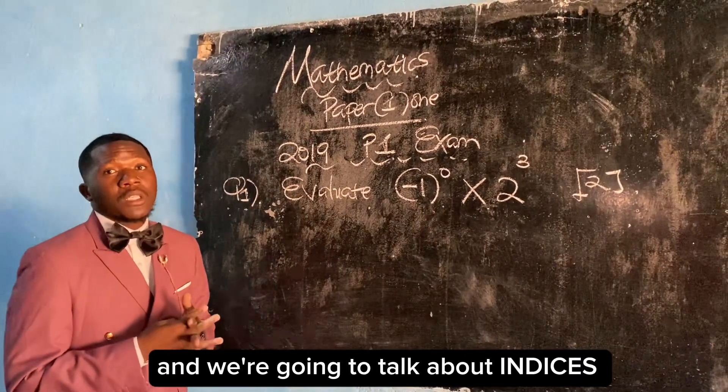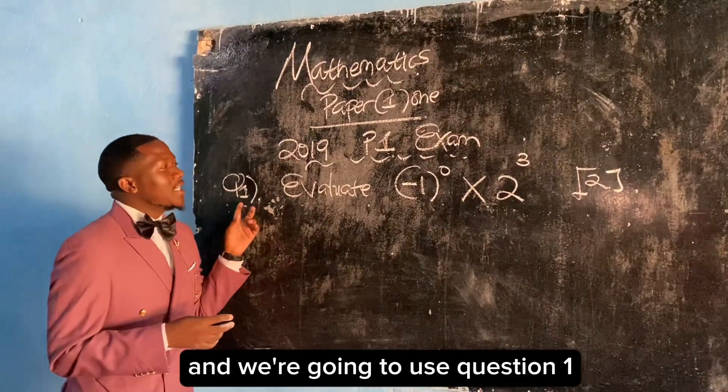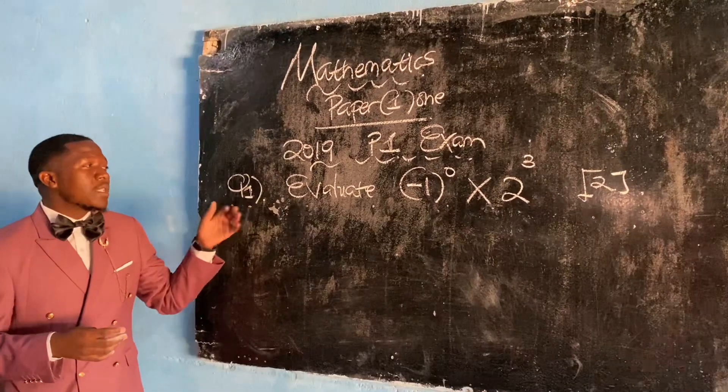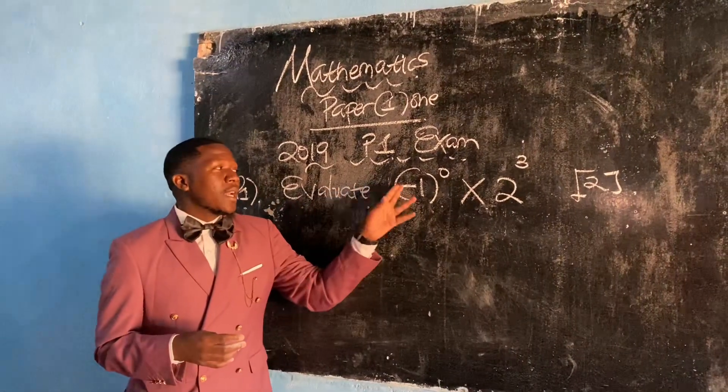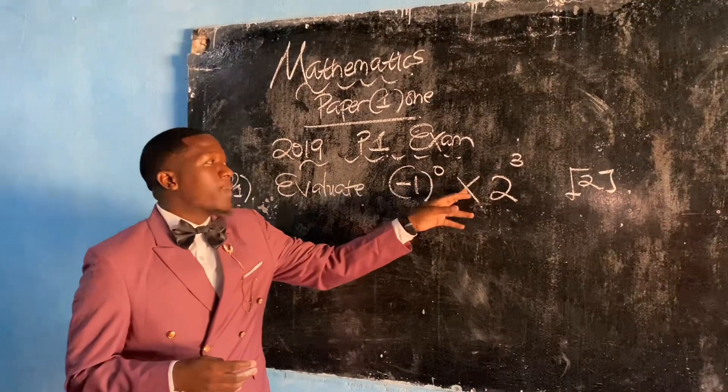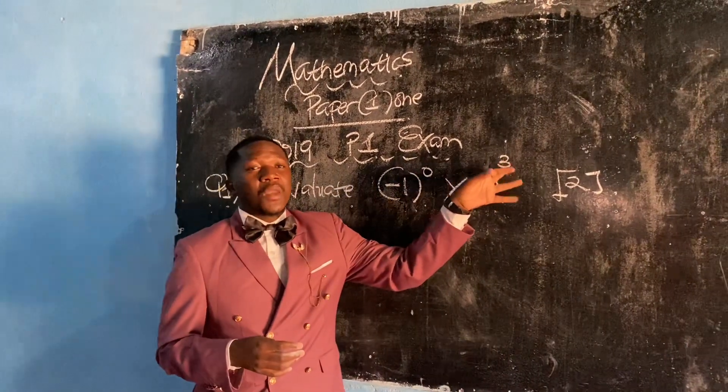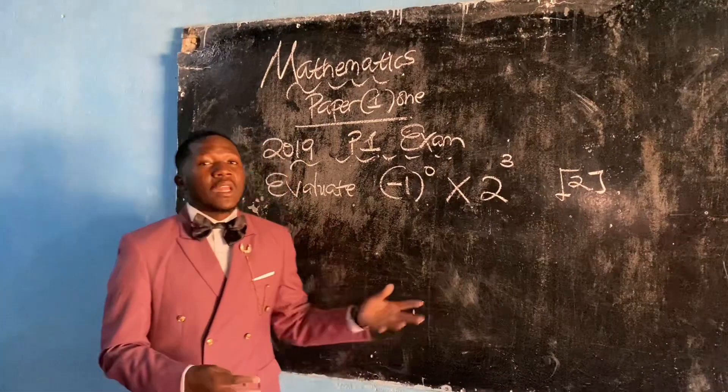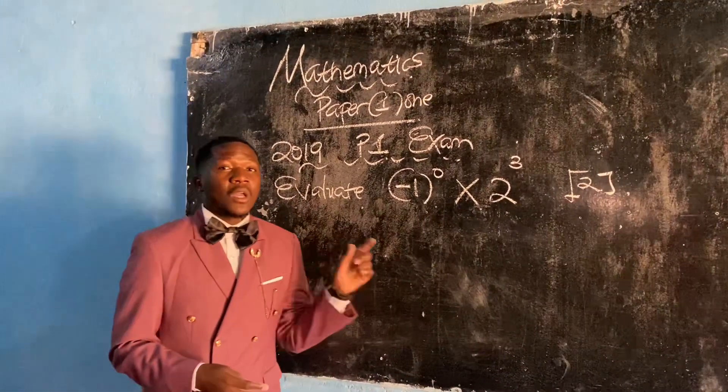We're going to talk about indices and look at question 1, which says: evaluate (-1)^0 × 2^3. The number of marks allocated to this question was 2 marks.